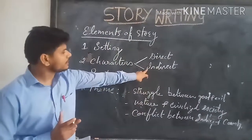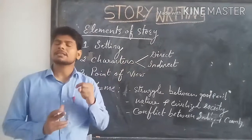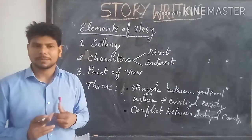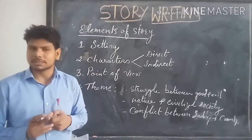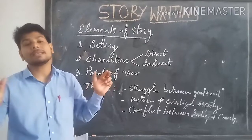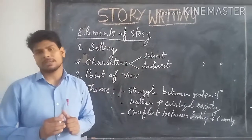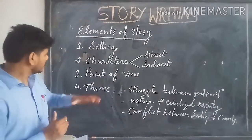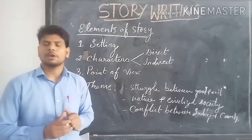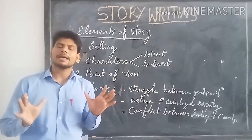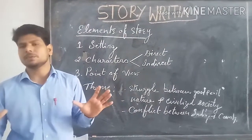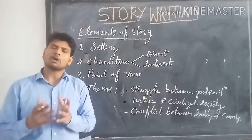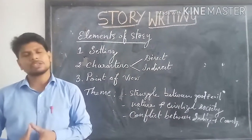On the other hand, indirect characterization is that which the audience implies from the given clues — for example, when we look at the appearance of the rabbit, that is called indirect characterization. The third element is point of view. Every story has to be told from a point of view. The author has his own point of view to tell a story, and according to that point of view, the story is told.